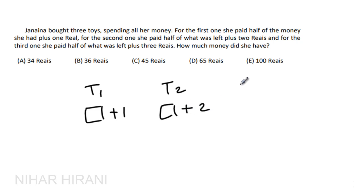And for toy 3, half of leftover after buying 2 toys plus 3. At the end she doesn't have any money. So the question is: how much money did she have in the beginning?